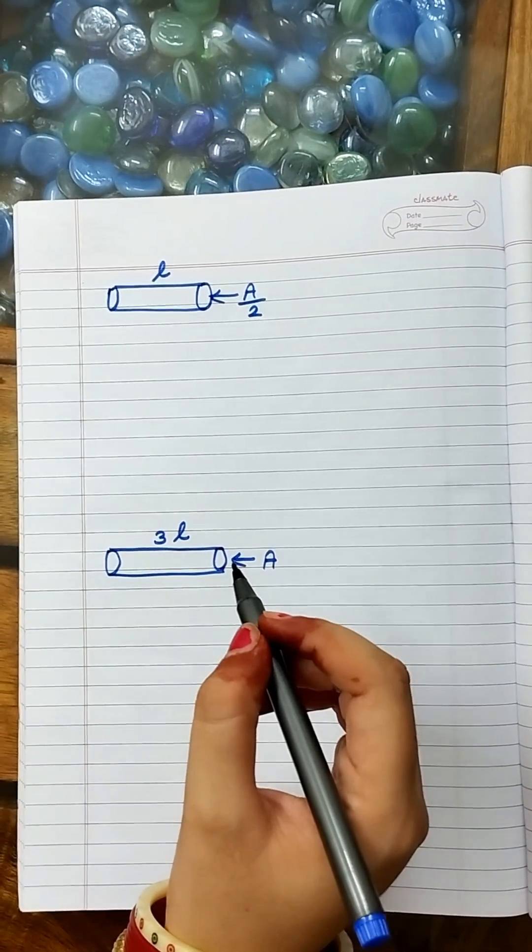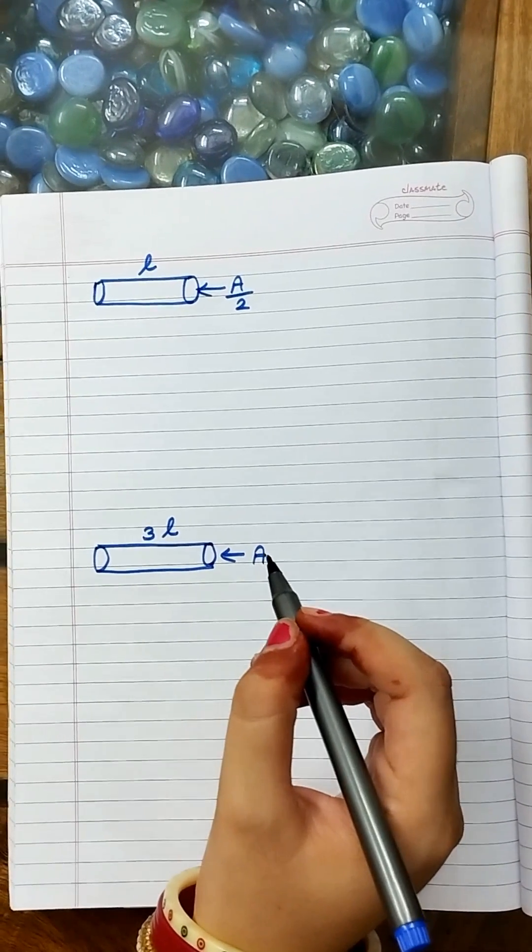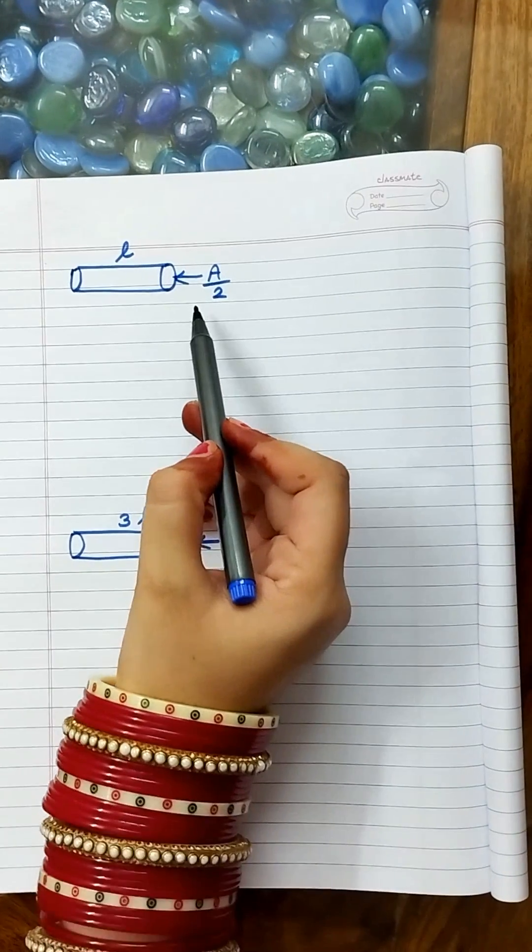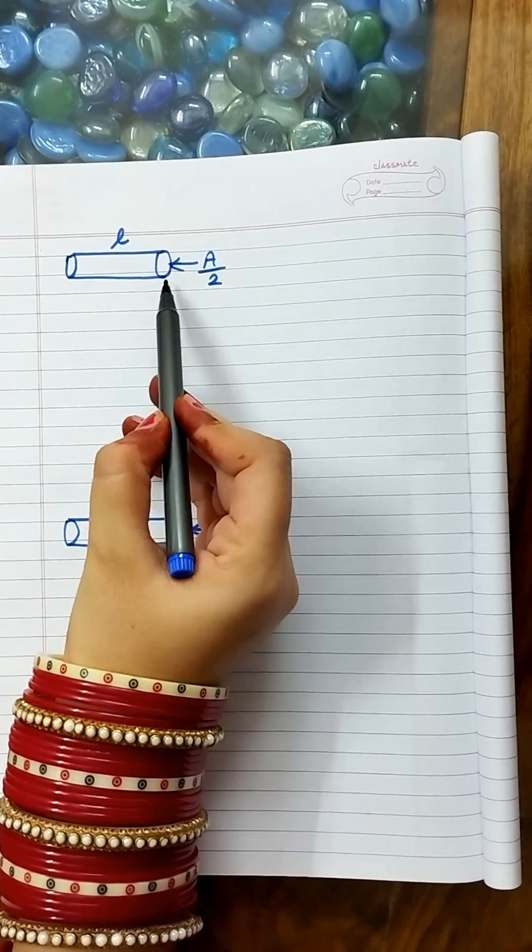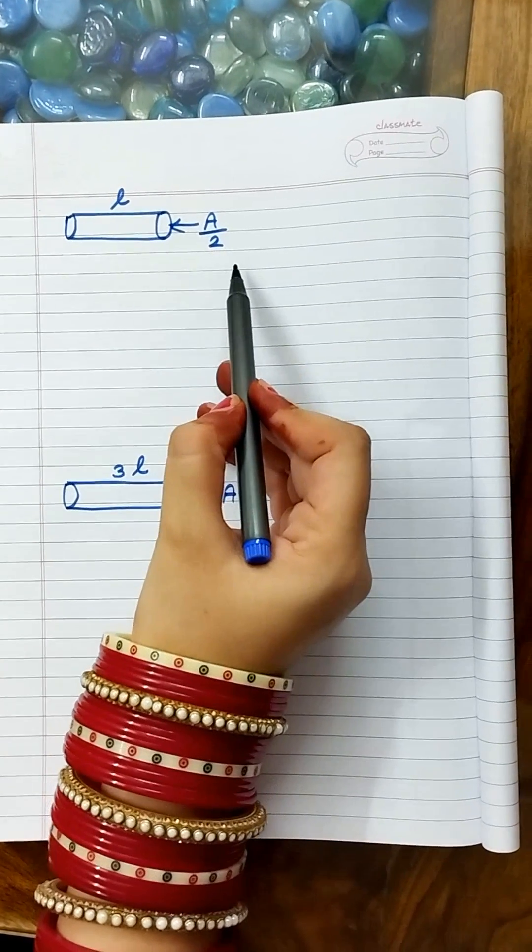What happens when we change the length of a conductor and area of cross-section? We will take two problems here. First, this conductor has length L and area of cross-section A/2.